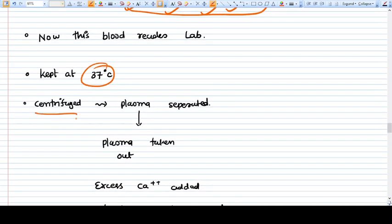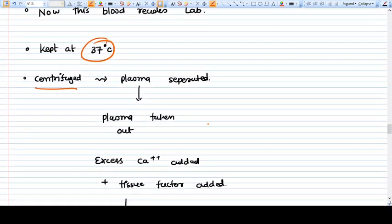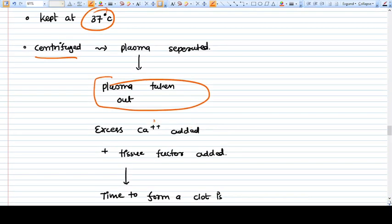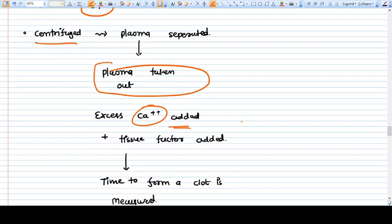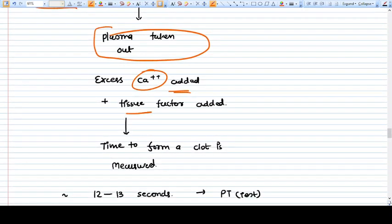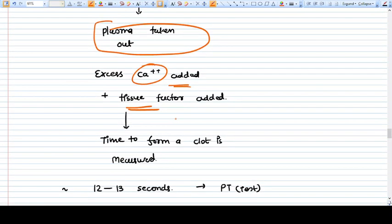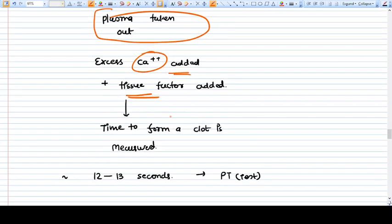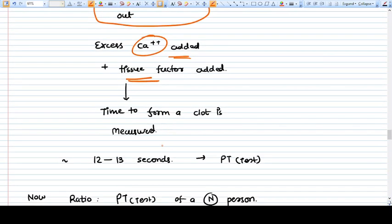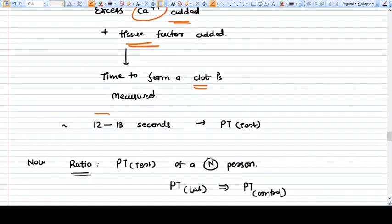At centrifuge, the plasma is separated and taken out. Excess calcium is added, so the effect is now reversed. When you add calcium in extra amount, it will reverse its effect. Now the tissue factor is also added. Once you add the tissue factor, then coagulation will start. Then the time is measured when the clot is seen visibly.